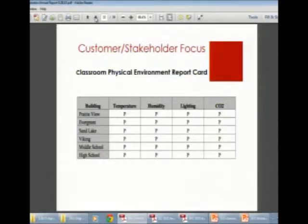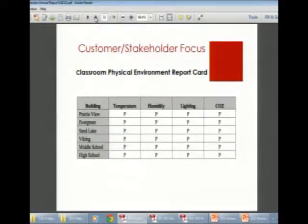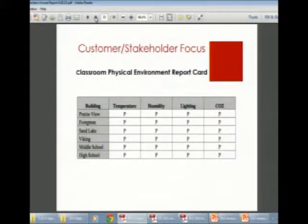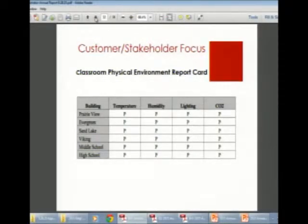Our last focus area is customer and stakeholder focus. Buildings and grounds conducts a classroom physical environment report card measuring temperature (68–72°F), humidity (below 60%), lighting (at least 30 foot-candles), and CO2 (under 1,200 ppm). We are meeting all standards in every classroom.